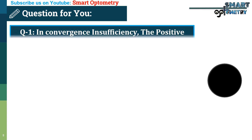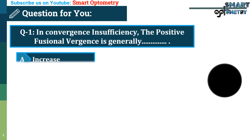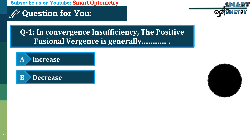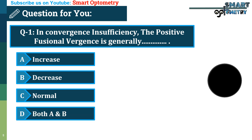Question 1. In convergence insufficiency, the positive fusional vergence is generally: A. Increase, B. Decrease, C. Normal, D. Both A and B.